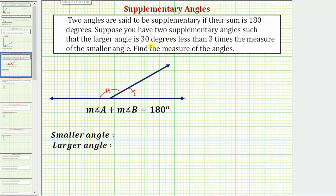So let's first let the smaller angle have a measure of x degrees. And now the larger angle is 30 degrees less than three times the measure of the smaller angle, which has a measure of x degrees.